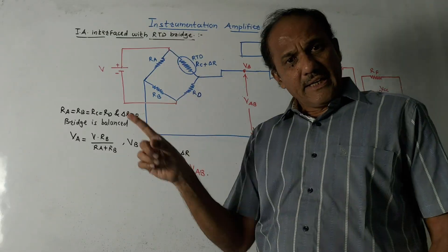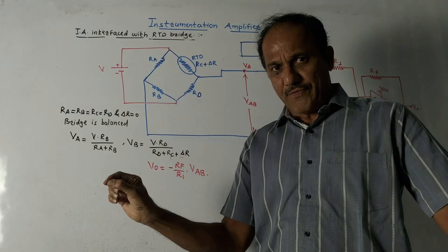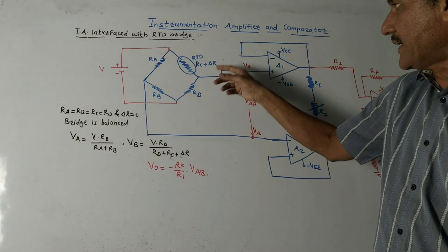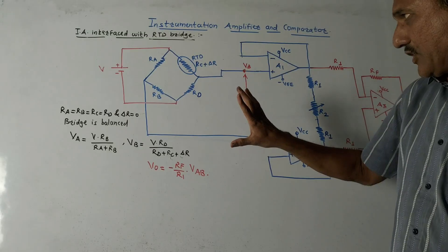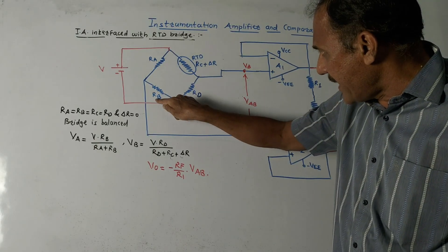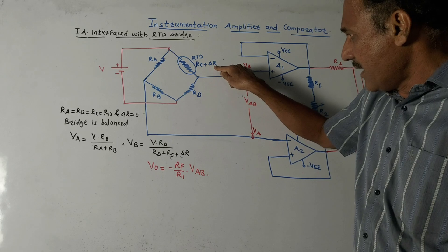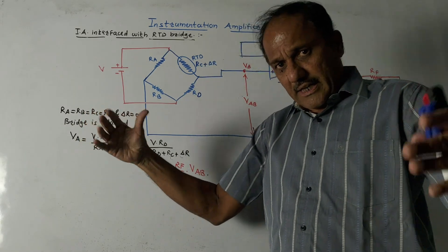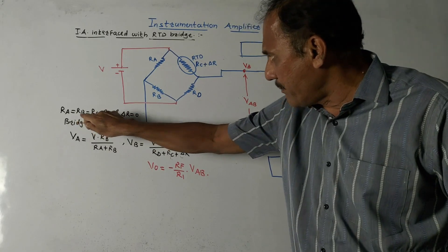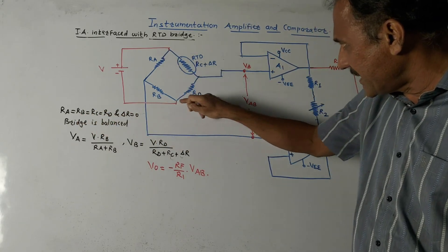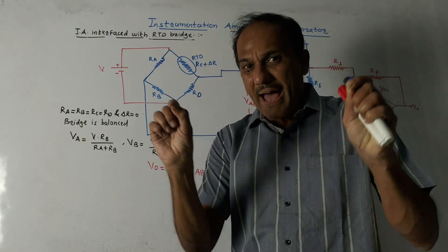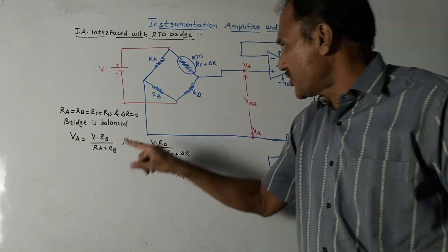This RTD has a positive temperature coefficient, meaning as temperature increases, the resistance of this device increases. There is one condition called balancing of the bridge. With resistors RA, RB, RD, and RC + ΔR: suppose ΔR is zero initially, and if the condition RA = RB = RC = RD holds — meaning all resistances are equal and ΔR is zero — then the bridge is said to be balanced.